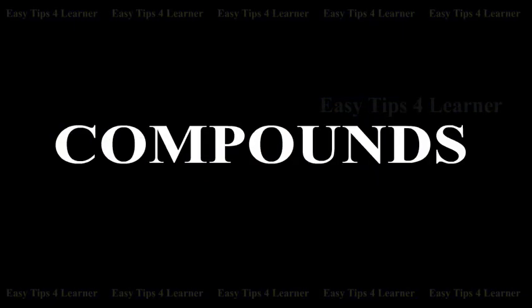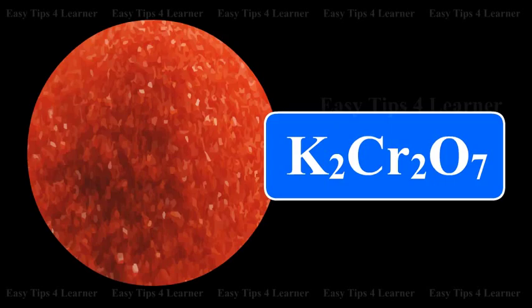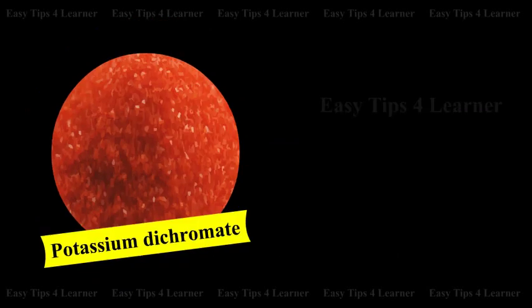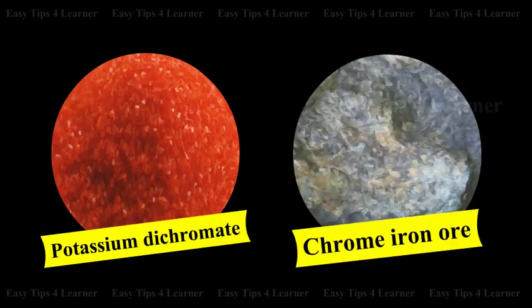Potassium dichromate, K2Cr2O7. The preparation of K2Cr2O7 from chrome iron ore involves the following steps.